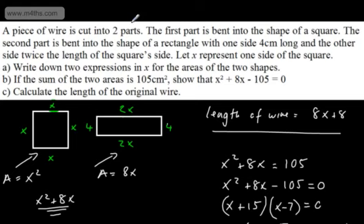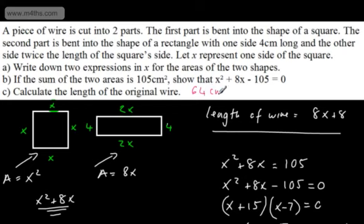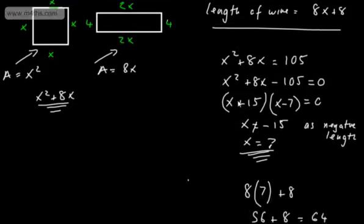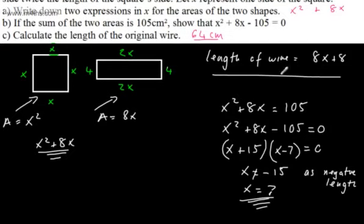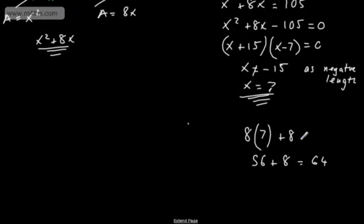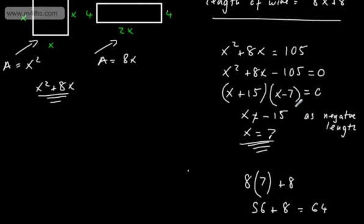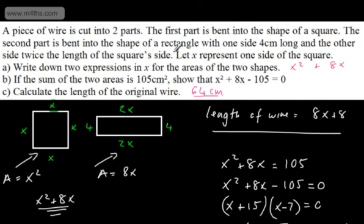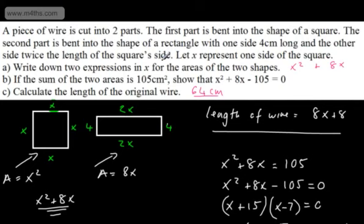So the length of the original wire is 64 centimetres. The key steps are: draw a quick sketch, write out what you've got, set up the equation, solve it — factoring if possible, or using completing the square or the quadratic formula if not — plug in the numbers, answer the question, check validity, and apply correct units.